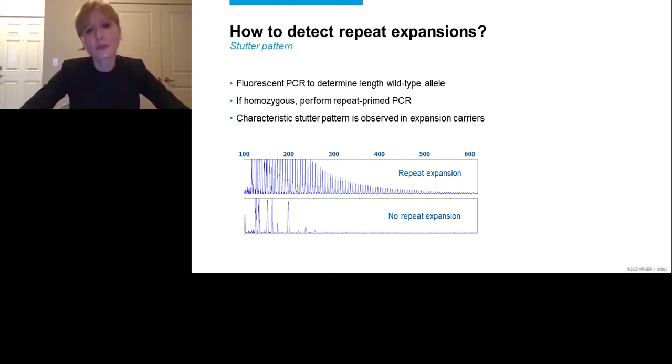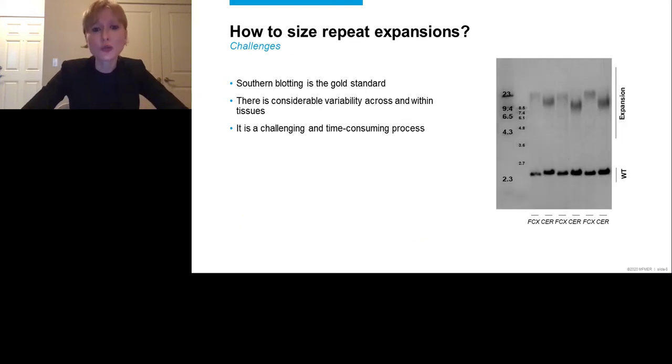But if you want to be 100% sure that the expansion is present or absent, you should do a southern blot, the gold standard. On this slide, on the right, you can see an example of a southern blot. The expansion is the top band and the wild-type allele, the bottom band. And in this case, we're displaying three individuals, three unique individuals, and two regions for each individual, the frontal cortex and the cerebellum. And as you may see, there is a significant difference in the repeat length. The repeat length is significantly higher in the frontal cortex than in the cerebellum. Furthermore, there is variability within each region. You can see that there is a smear. It's not one nice, concise band. There is variability. So it's important to realize that there is variability across tissues as well as within tissues.